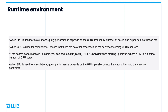When using GPU queries, the query performance depends on the parallel computing power of the GPU and its data bandwidth. The stronger the GPU's parallel computing power, the better the Milvus query performs. In addition, since GPU video memory is generally smaller than the total amount of data in a collection, data is not resident in GPU memory. Data is frequently read from CPU memory to GPU memory during queries, so the greater the GPU transfer bandwidth, the better the performance of queries using GPUs.